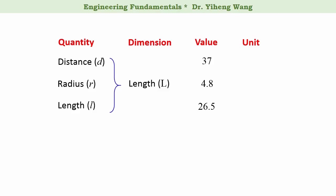For the same dimension — in this case length — there exist different unit systems and many different units. For example, the distance is 37 feet, the radius is 4.8 centimeters, and the length is 26.5 inches. The conversion between different units for the same dimension is a fundamental skill for engineers, and I will discuss more of that in the following videos.